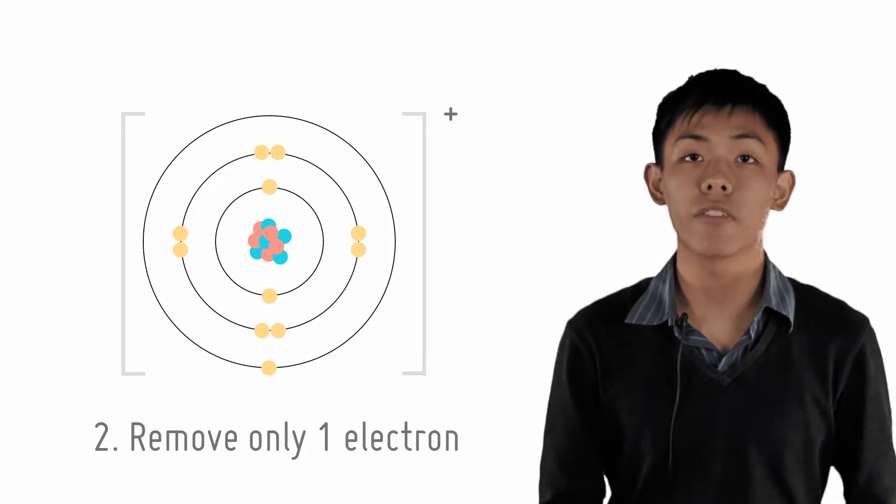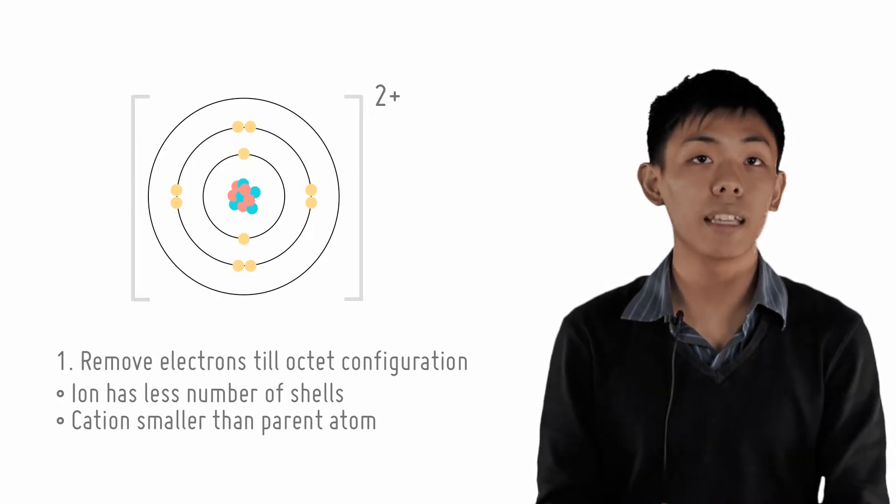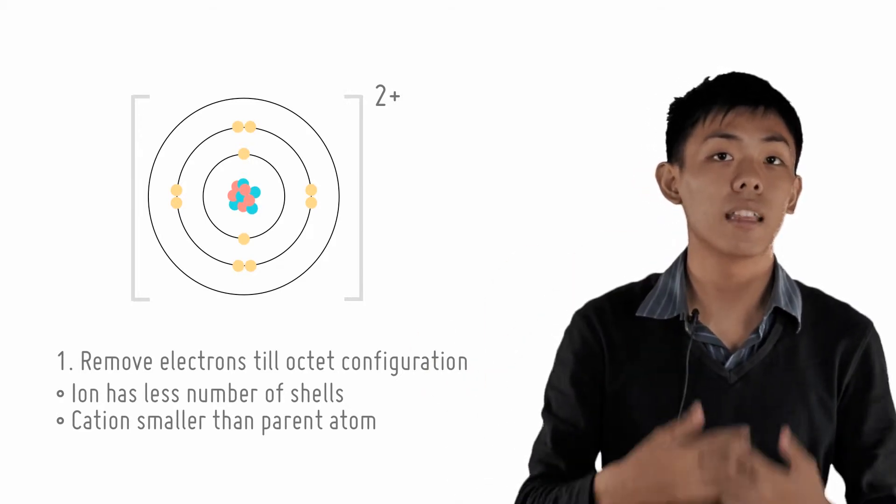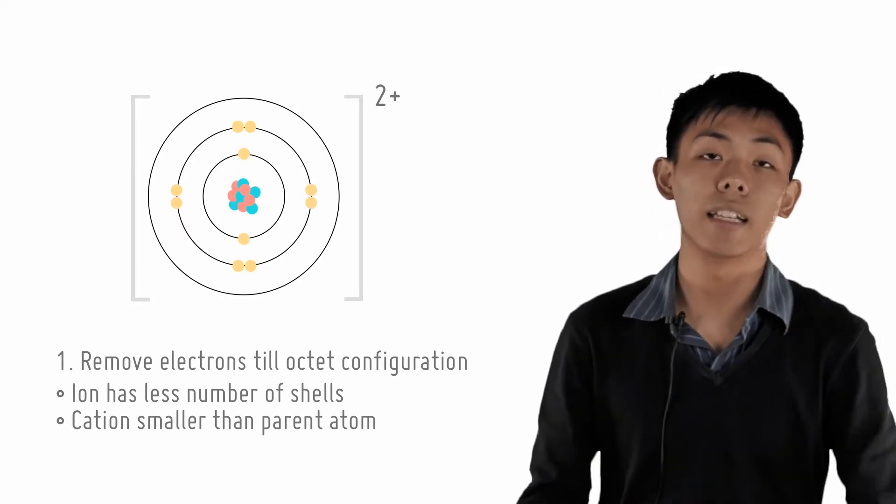Now let us consider the first case. When all the electrons are removed from the outermost shell, this would mean that the ion has less number of shells than the parent atom. Naturally, we should see that the ion will be smaller than the parent atom.